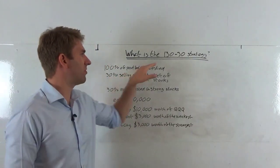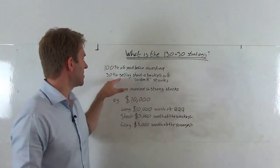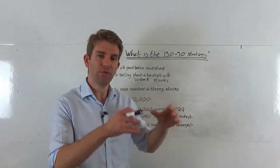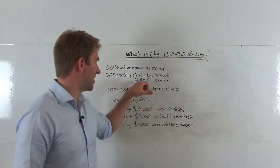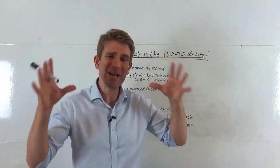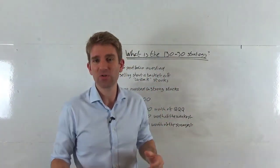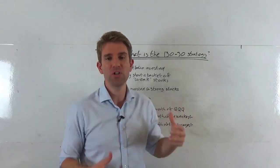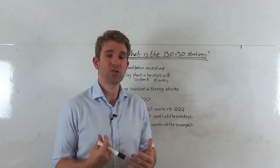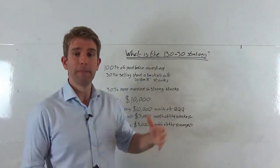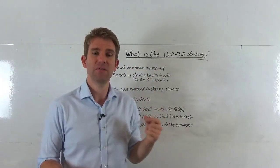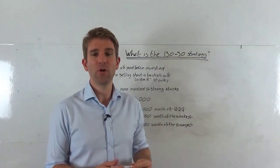Then we have the 30 portion of it, which is selling short a basket of weak stocks. So we look for the weaker stocks. I've put weak in kind of commas here because we don't know how weak stocks are. We're trying to pick stocks that are going to underperform. In a perfect world, we would pick stocks that are going to fall when the rest of the market rises. But weak is good because it means that we are trying to take advantage on the short side of those.